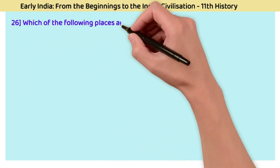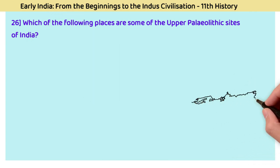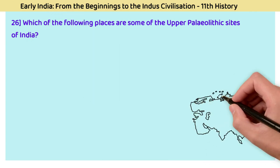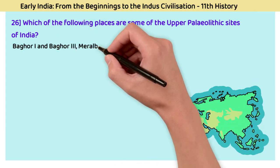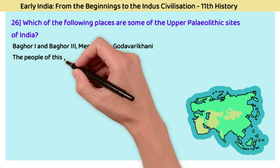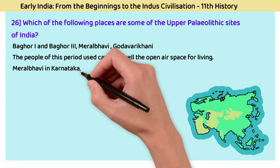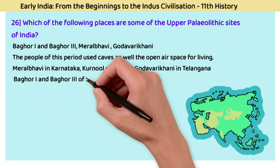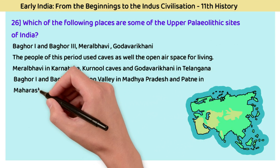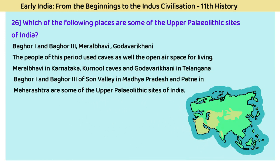Question 26: Which are some of the Upper Paleolithic sites of India? The answer includes Bagor 1 and Bagor 3, Meeral Bavi, and Godavarikani. People of this period used caves as well as open-air spaces for living. Meeral Bavi in Karnataka, Kurnool Caves and Godavarikani in Telangana, Bagor 1 and Bagor 3 of Son Valley in Madhya Pradesh, and Patne in Maharashtra are some Upper Paleolithic sites of India.